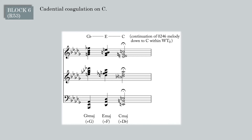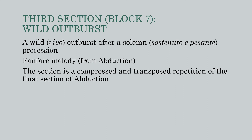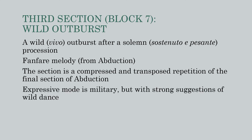In the cadential coagulation that concludes the block, the melody is extended downward to C within the same whole-tone scale, and the planing accompaniment follows with three dissonant chords consisting of a major triad with a dissonant distractor a semitone above its root. Next, we get a short, violent, contrasting section — a wild outburst after a solemn procession. The fanfare melody comes from abduction, and this section is a compressed and transposed repetition of the final section from abduction, complete with punctuating chords. The expressive mode is military, but with a strong hint of a wild dance.